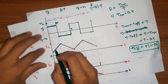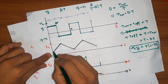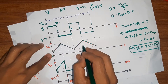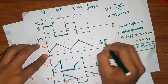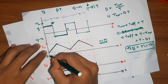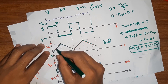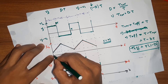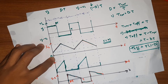What is continuous conduction mode? When the inductor current never reaches zero, it is continuous conduction mode (CCM). When the inductor current does reach zero at some point during the switching cycle, it is discontinuous conduction mode (DCM).